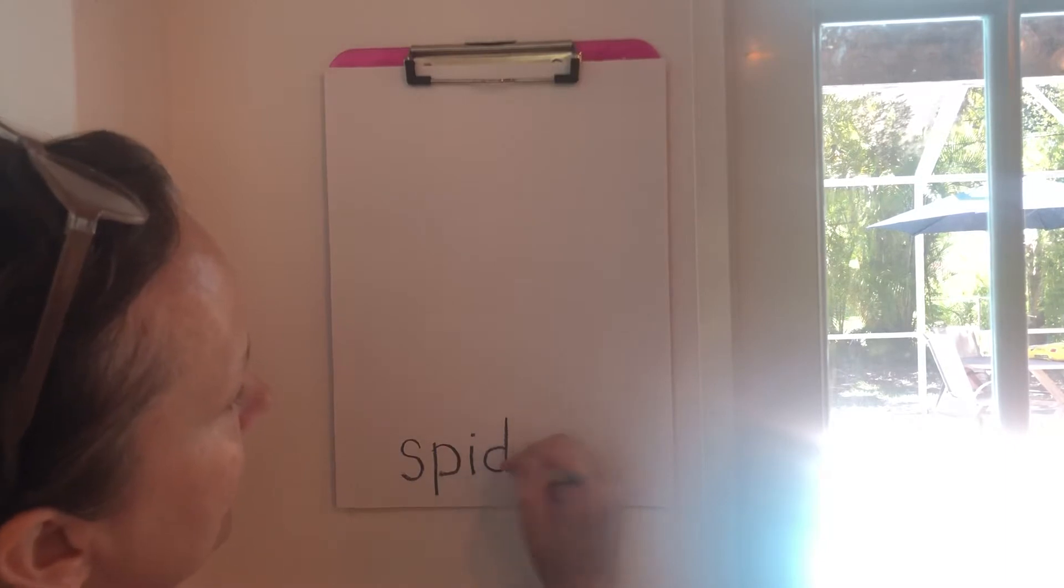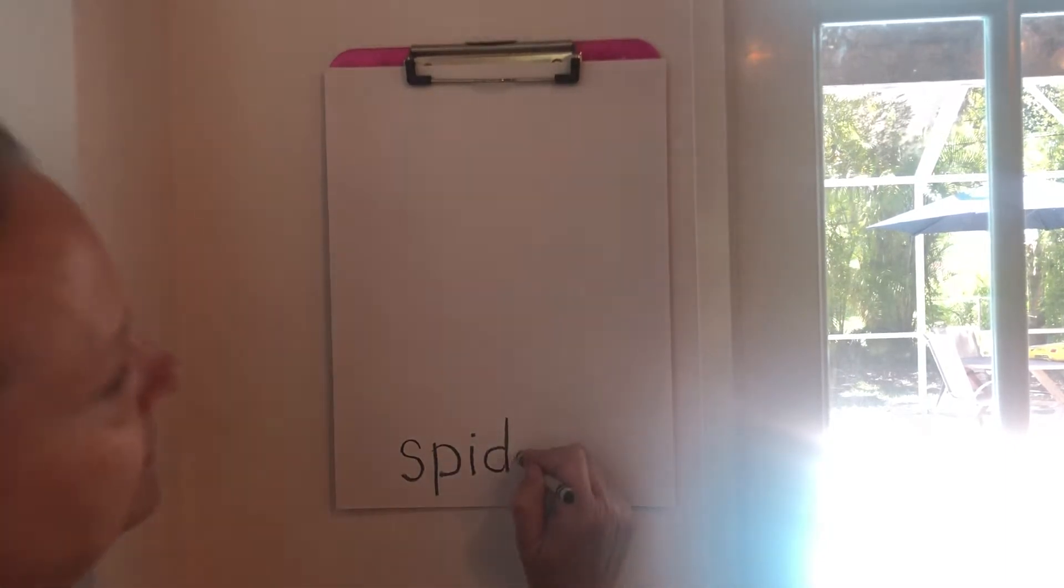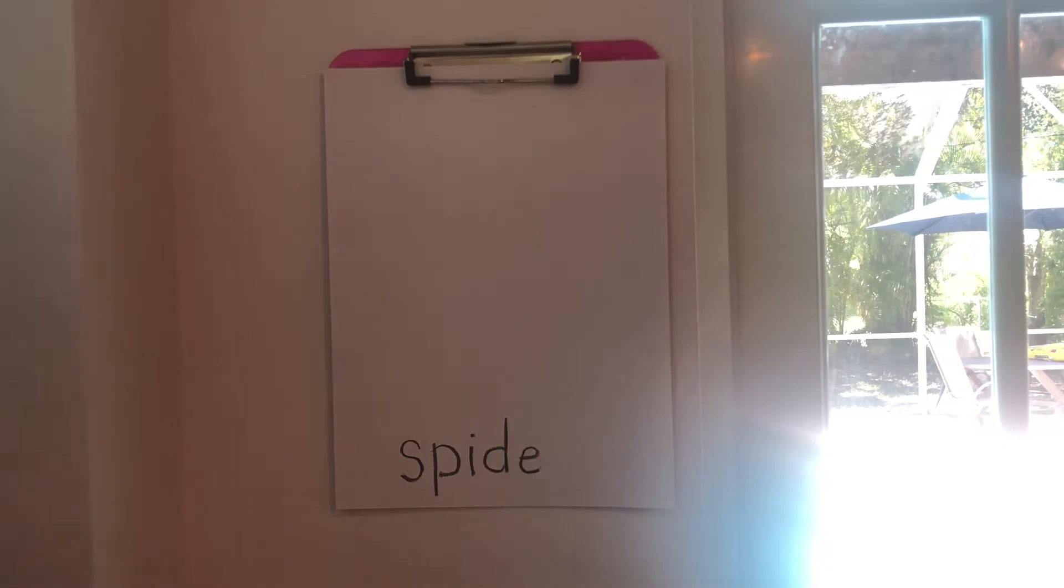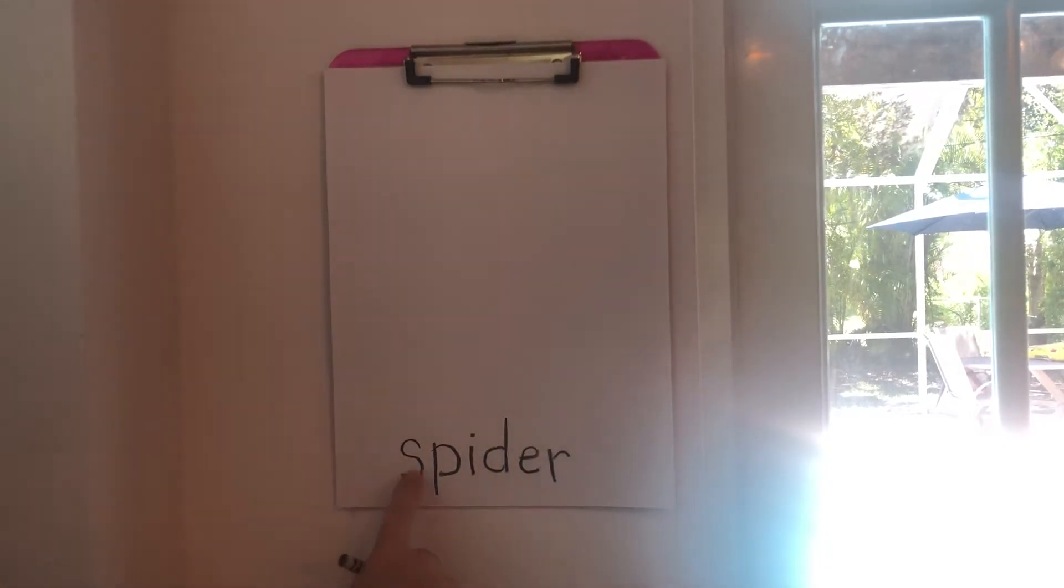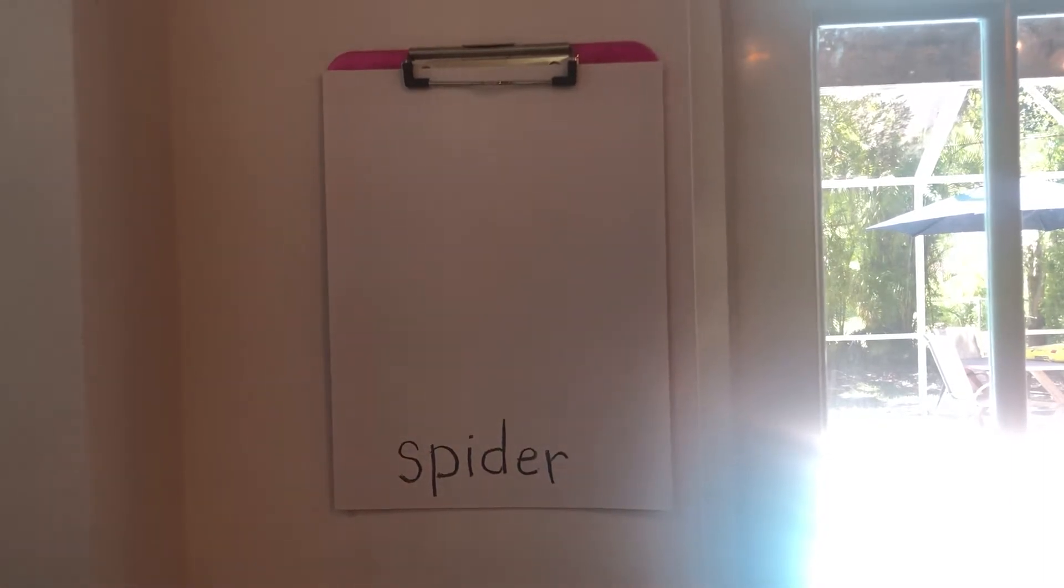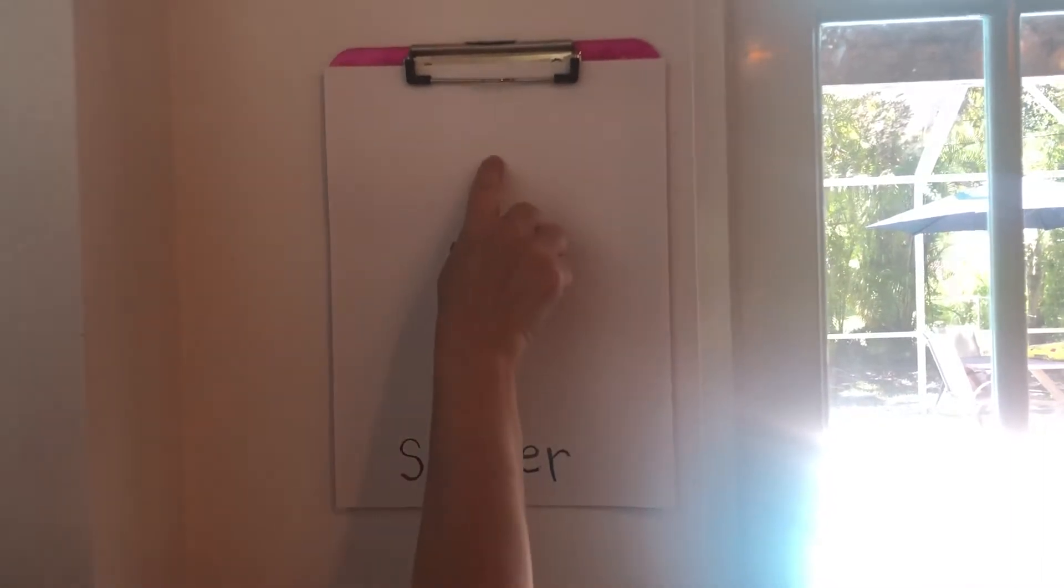And a D and an E and an R. S P I D E R. And this word has what? Two vowels, the I and the E. Alright, the first thing we're gonna do is make a circle right around here.